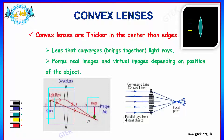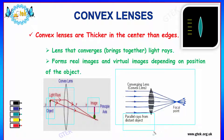This shows how the position of the object determines whether real or virtual images are formed. This depiction shows parallel rays from a distant object passing through the convex lens — that is, the converging lens — through to the focal point shown here.